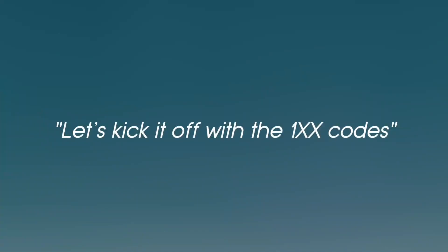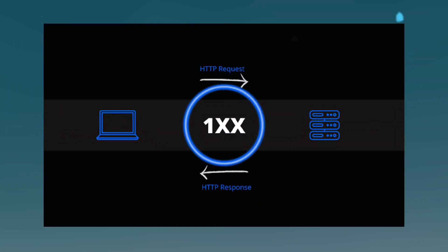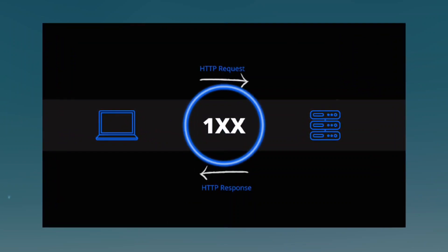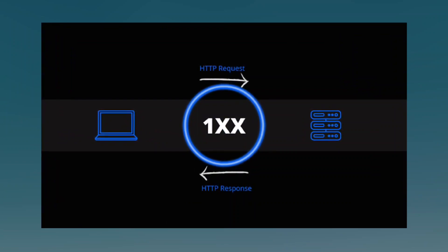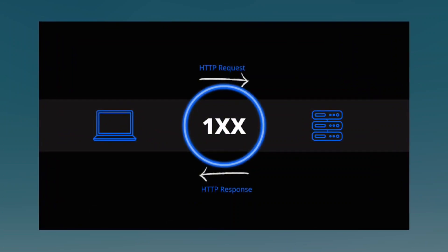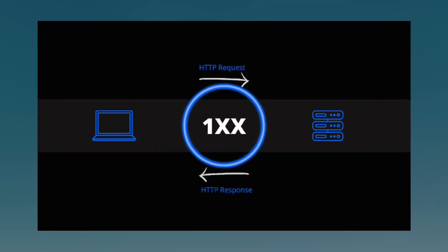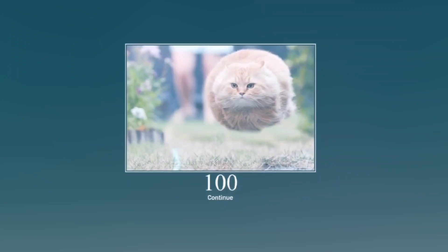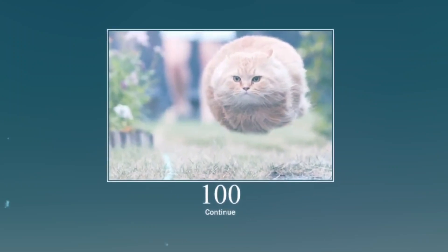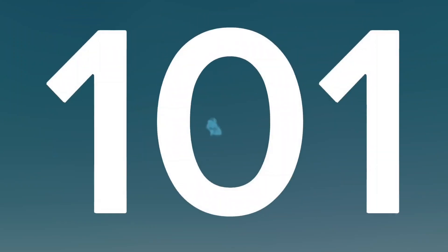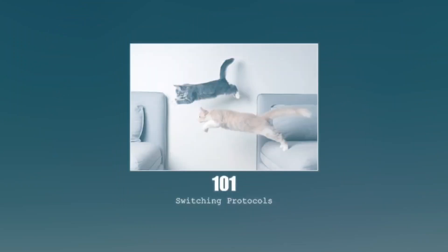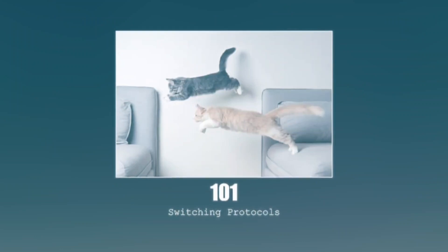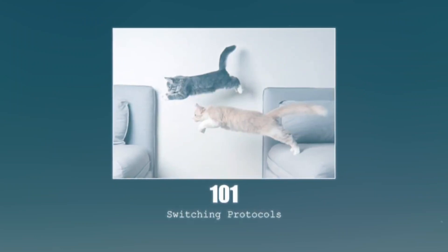Let's kick it off with the 1xx codes. These are informational, which means the server received your request and is processing it. You don't see these very often as a regular user, but developers do. 100 Continue — the server is telling the client to keep going with the request, just a green light to proceed. 101 Switching Protocols — this one's rare, but it happens when the server agrees to switch to a different protocol, like upgrading from HTTP to WebSockets.